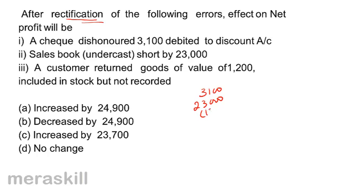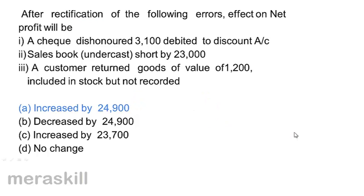My sales would come down by 1,200. Therefore, the effect on profit is 3,100 plus 23,000 minus 1,200 equals 24,900. It will increase by 24,900. After rectification, the profit will increase by 24,900. Correct option A.